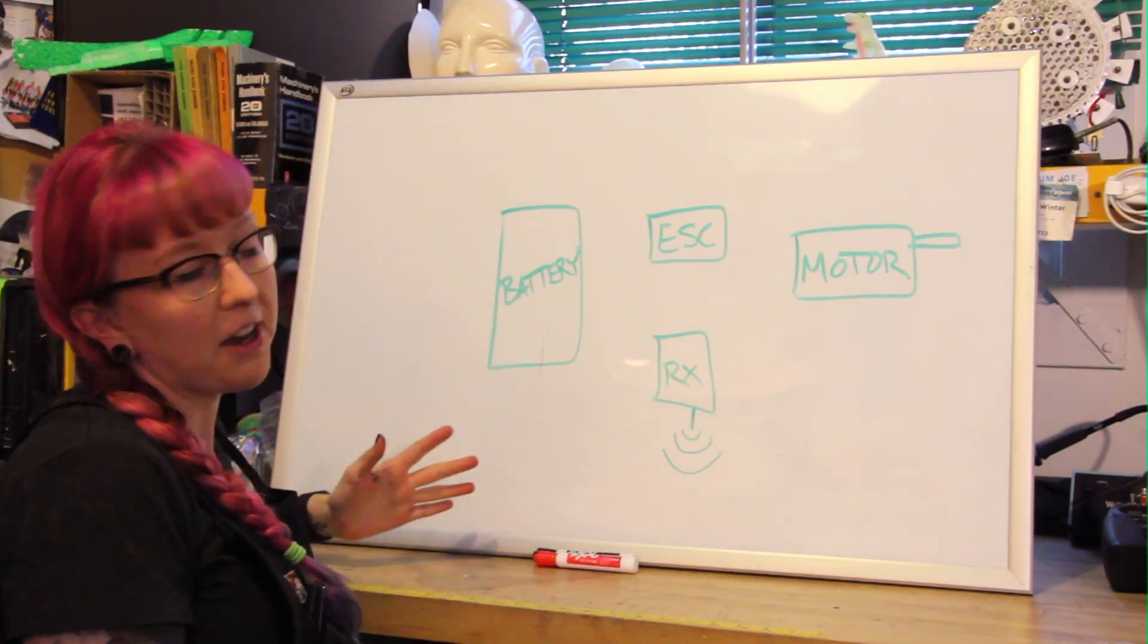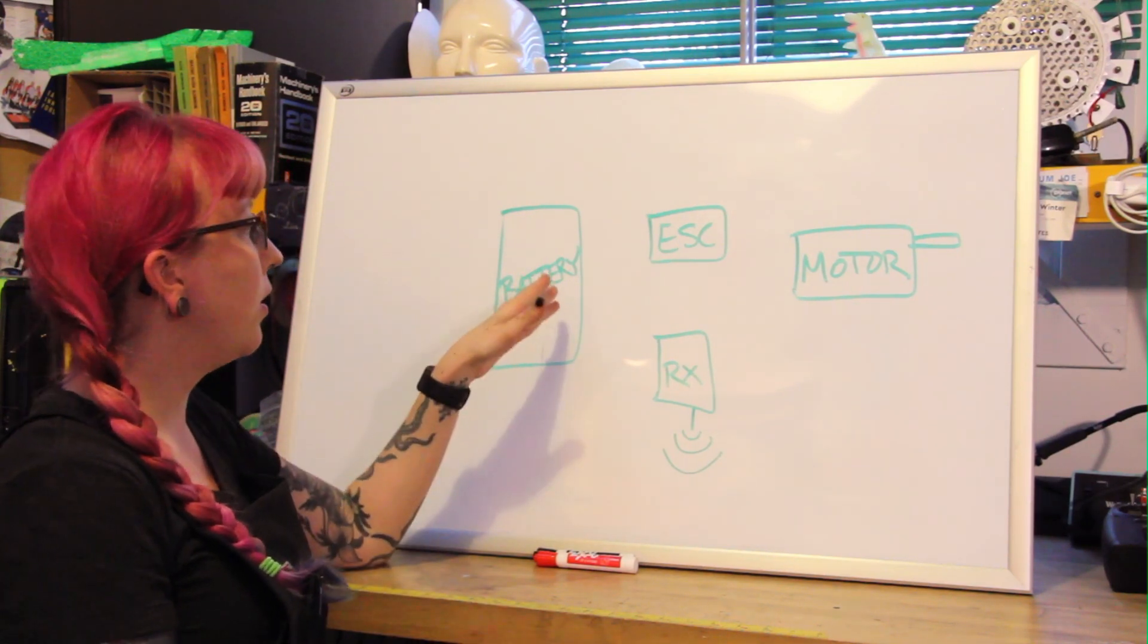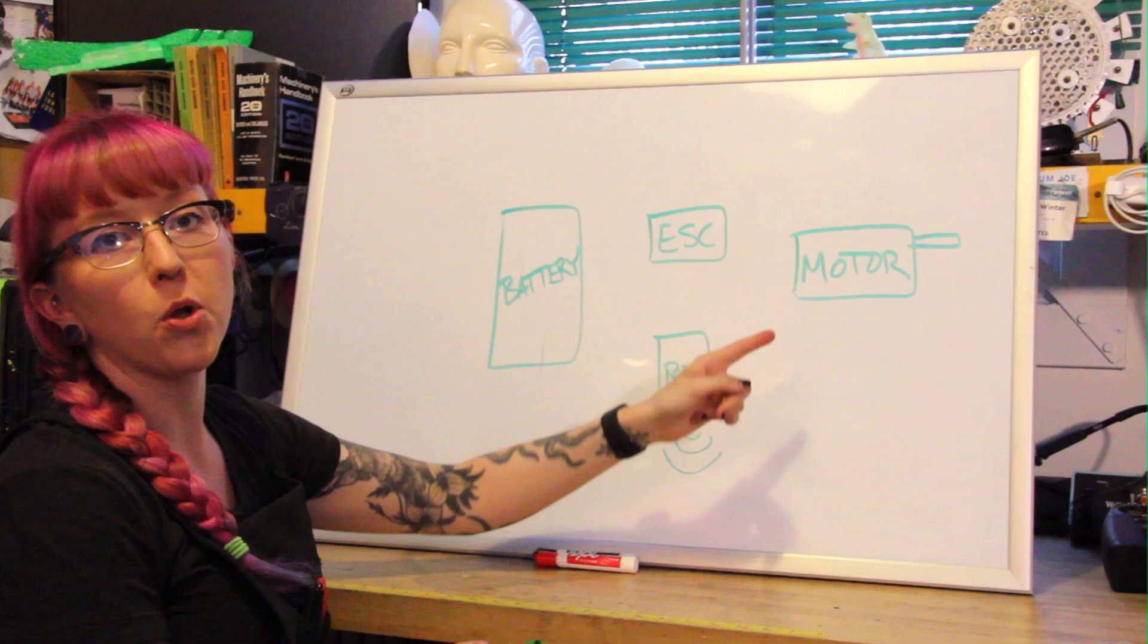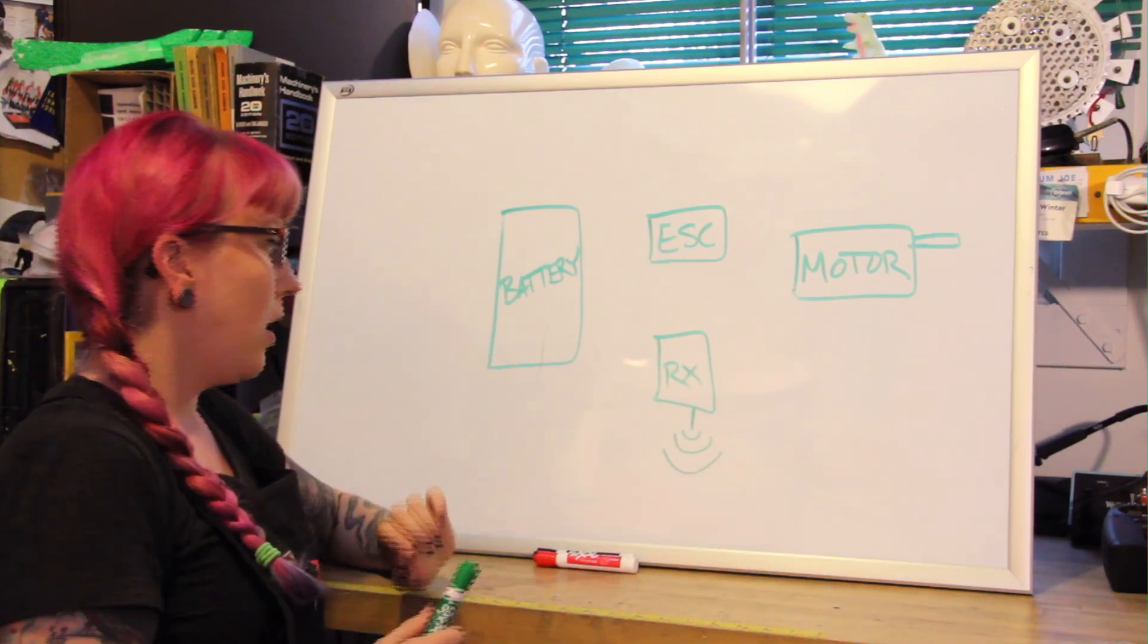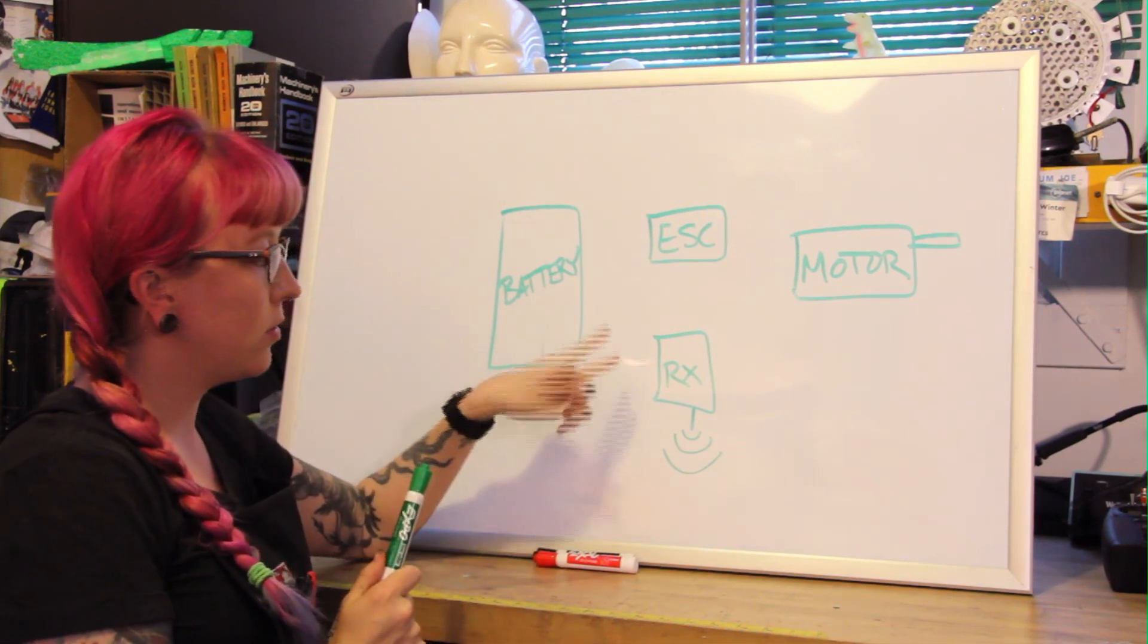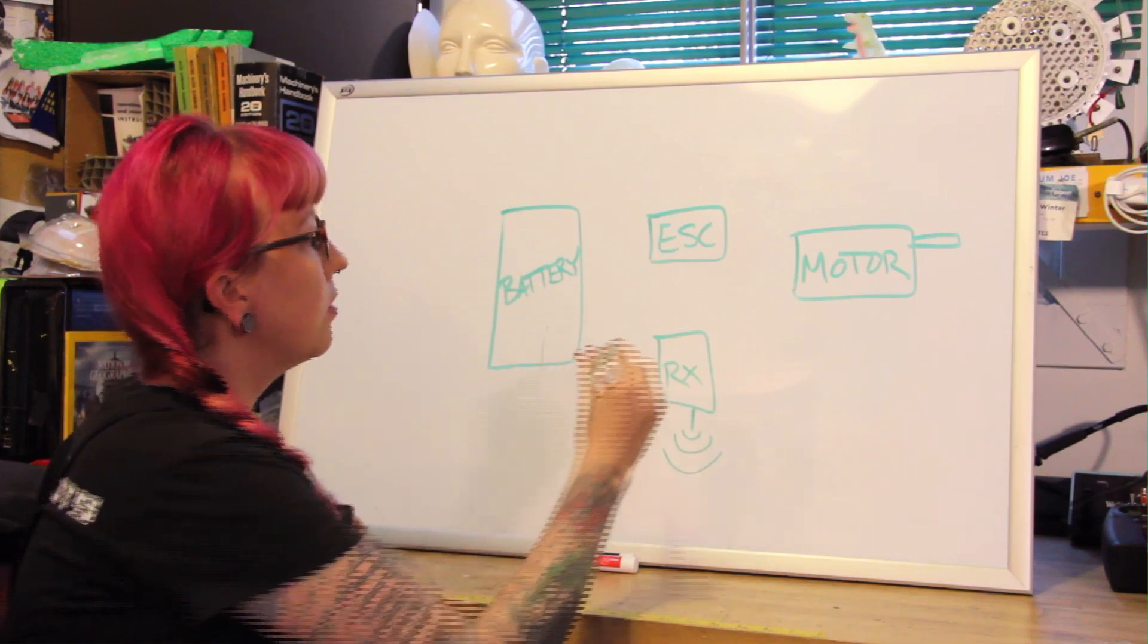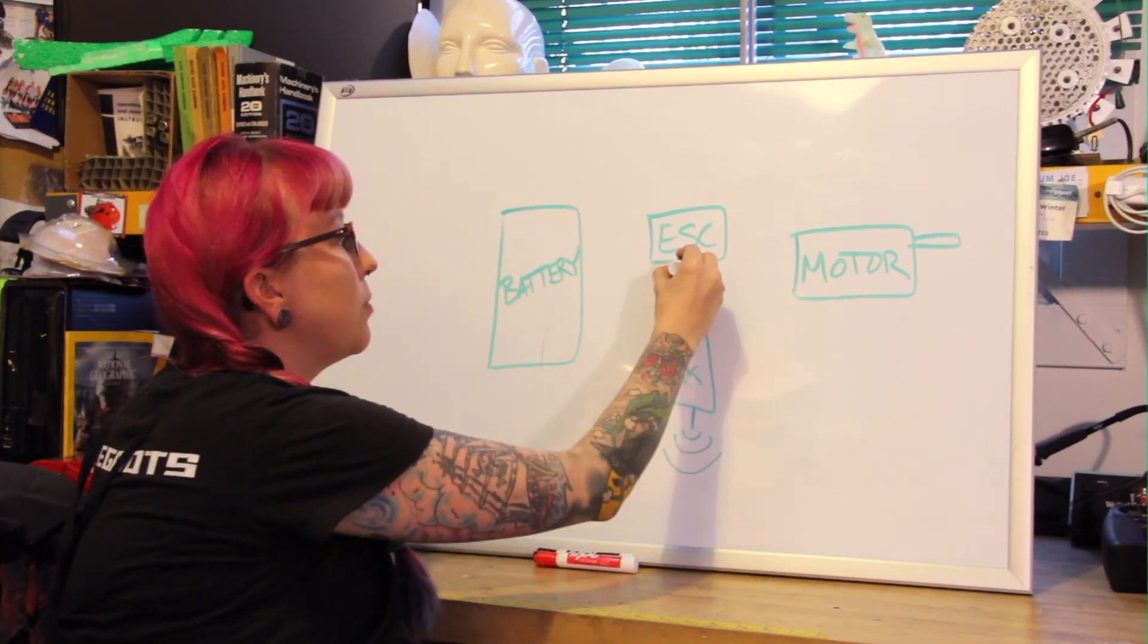Alright so this is the same diagram for the drive chassis. We have power, a speed control, motor, and the receiver. I will be taking my joysticks, my transmitter, and sending a signal to the receiver. It picks it up and takes that signal and puts it into my speed control.